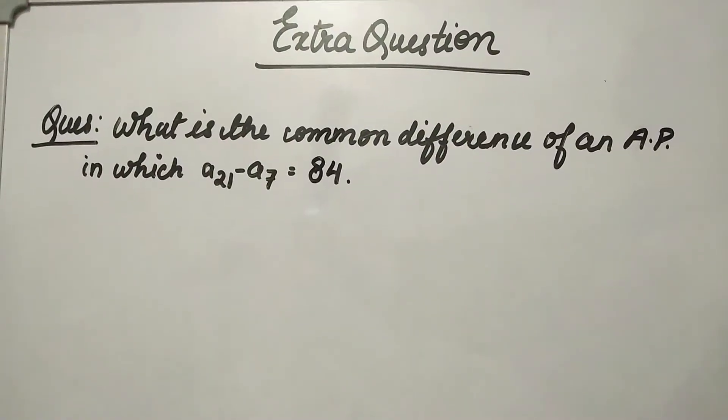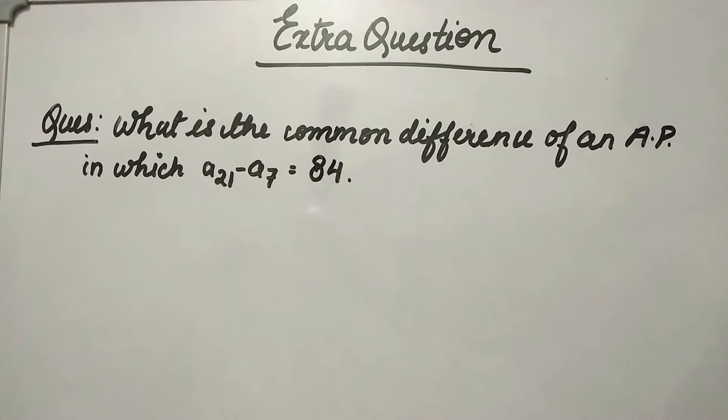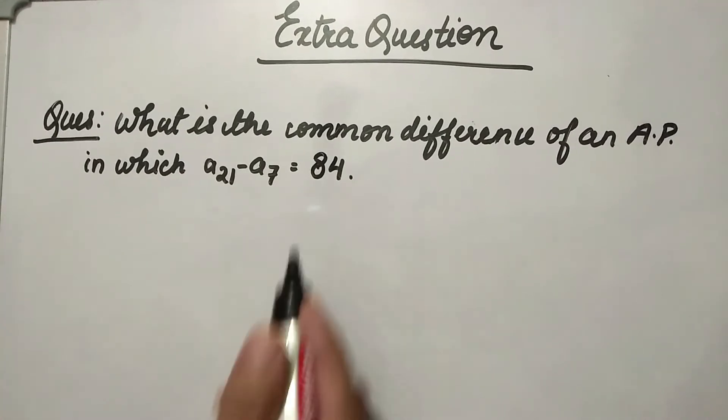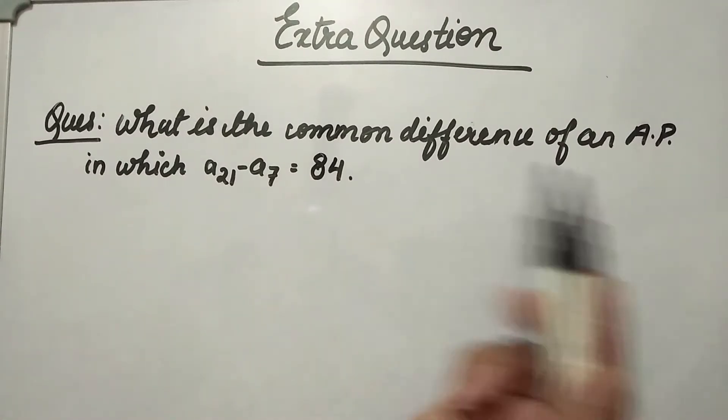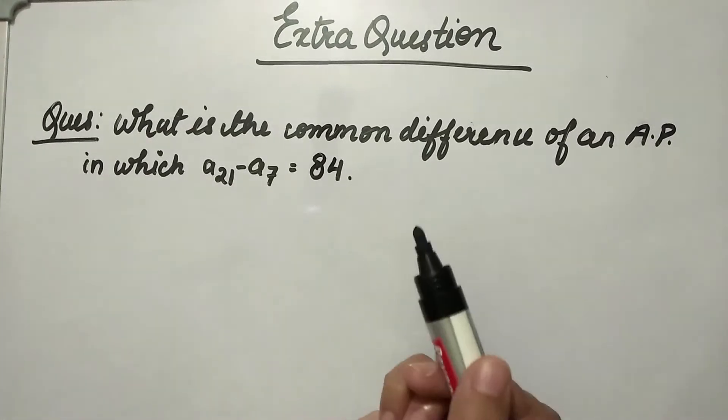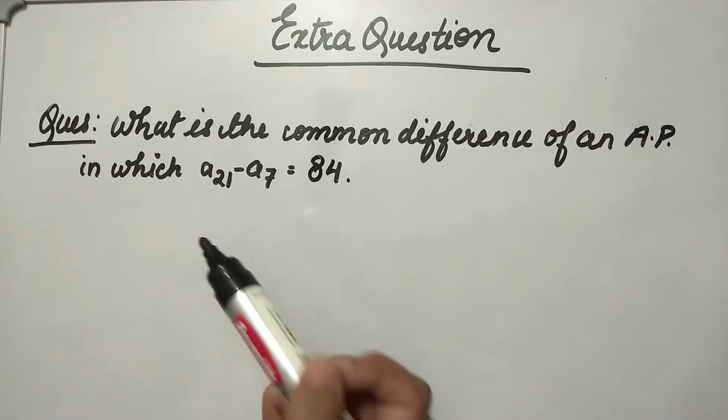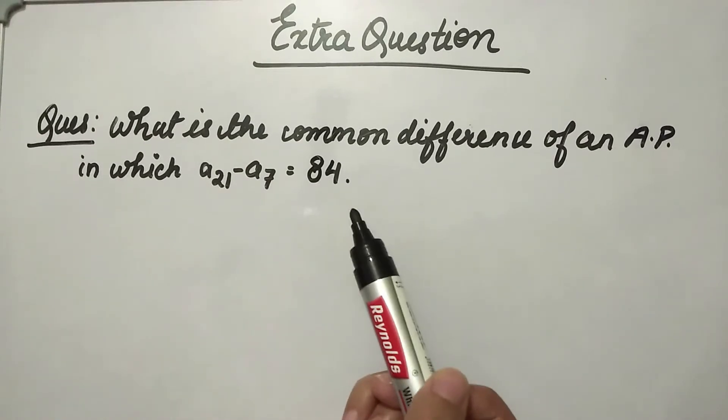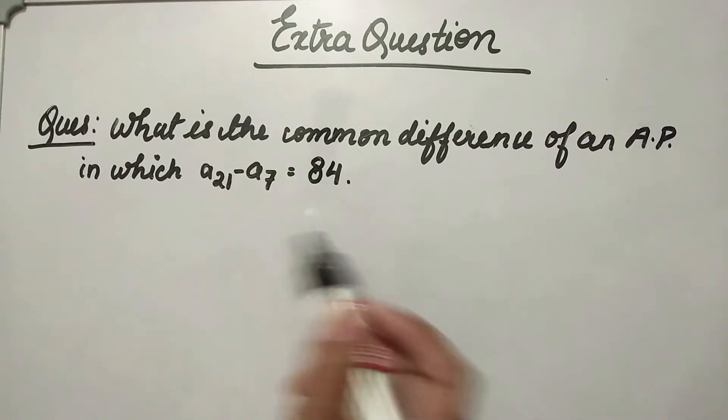Hello guys, welcome back to my channel Plus Minus Maths. Today's question is: What is the common difference of an AP in which a21 minus a7 is equal to 84? So we have a condition and we need to find the common difference.